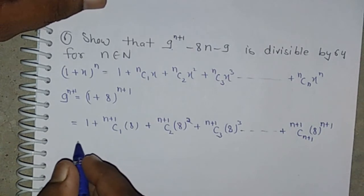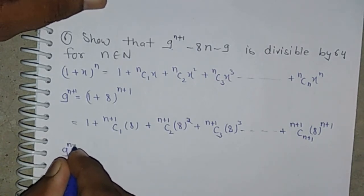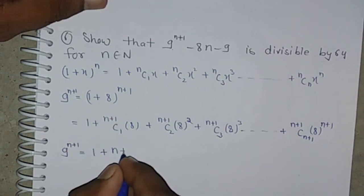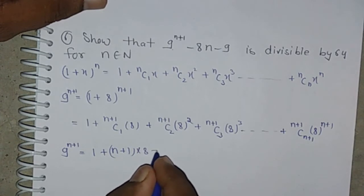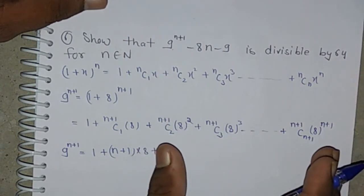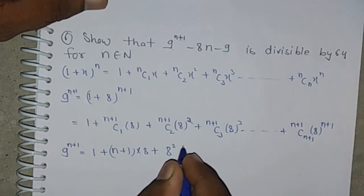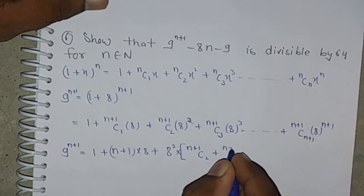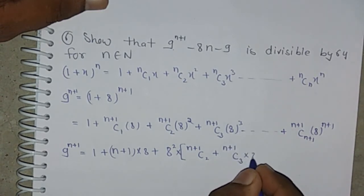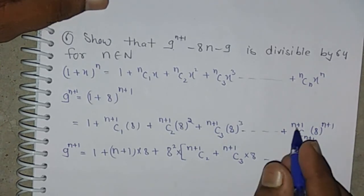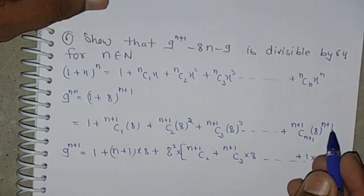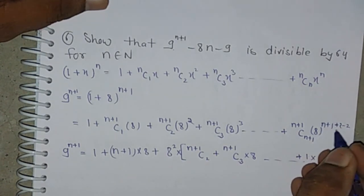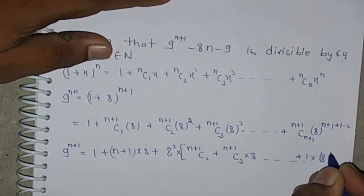Now this equals 9 to the power n plus 1. Since (n+1)C1 equals n plus 1, the second term becomes n plus 1 times 8. Taking 8 squared as common from the remaining terms, we get 8 squared times the sum of (n+1)C2 plus (n+1)C3·8 plus ... plus (n+1)C(n+1)·8 to the power n minus 1.